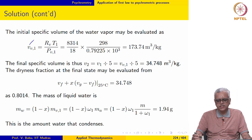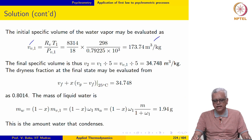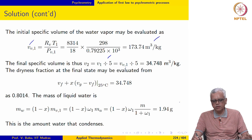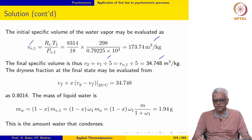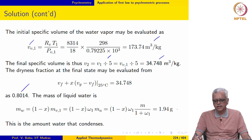The specific volume of water vapour at the initial state is calculated using the ideal gas equation of state, giving 173.74 m³/kg. The final specific volume is one-fifth of the initial value, so V1/5, giving 34.748 m³/kg. From this we may evaluate the dryness fraction to be 0.8014.